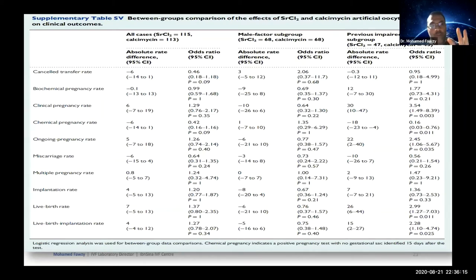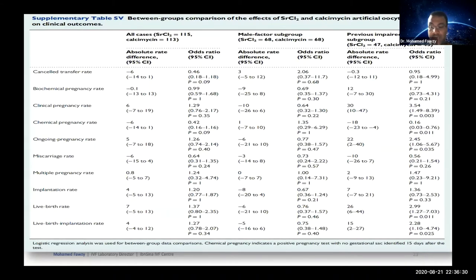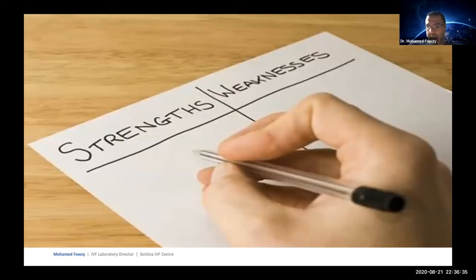Overall, comparing strontium chloride with calcimycin AOA resulted in comparable clinical outcomes. For the male factor subgroup, both showed similar outcomes. For previous impaired fertilization cycles, strontium chloride was superior to calcimycin, resulting in higher rates of live birth and live birth implantation.